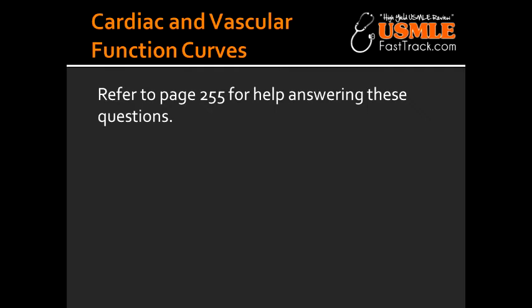What does number 4 represent in this picture? Number 4 represents heart failure or a narcotic overdose, because in this there is a decrease in inotropy. This leads to a decrease in cardiac output, but the venous return is normal as well as the end diastolic volume is normal.